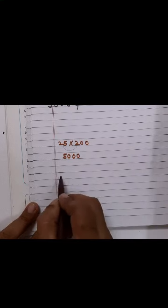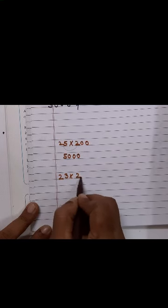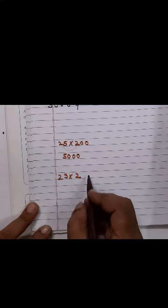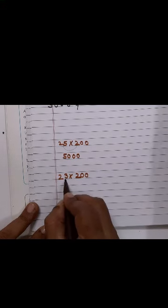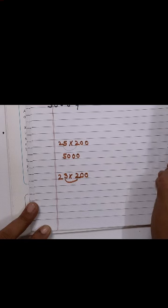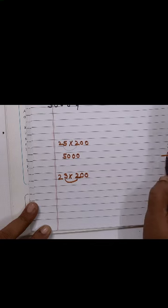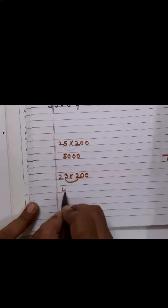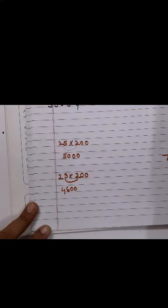Take this children, 23 into 200. What will you do? Multiply first this children. If you don't know you can always do the working. 23 into 2, that is 6 and 2 times 2 is 4. So that will be 46. Now children, how many zeros? 2 zeros. Simple.